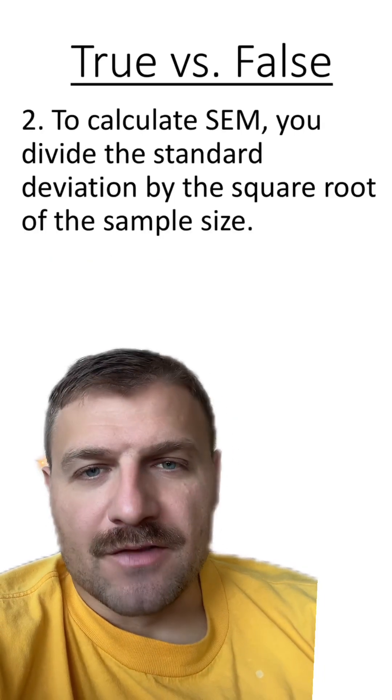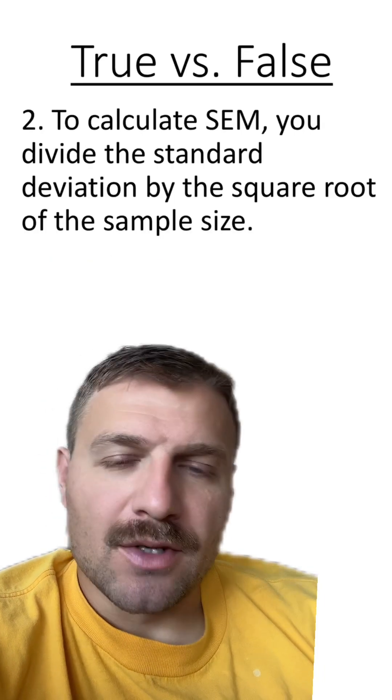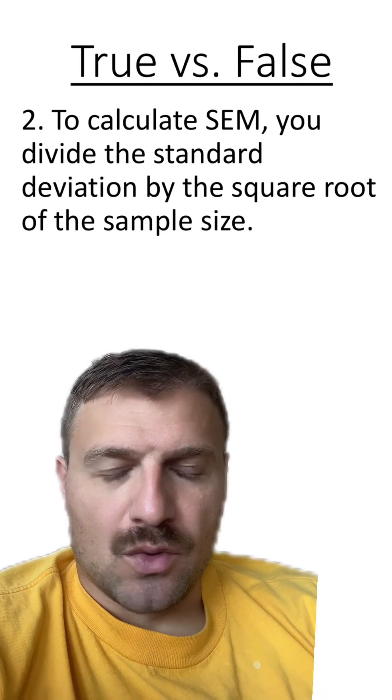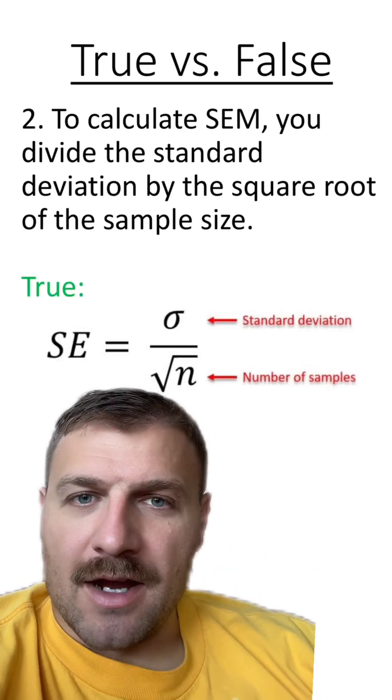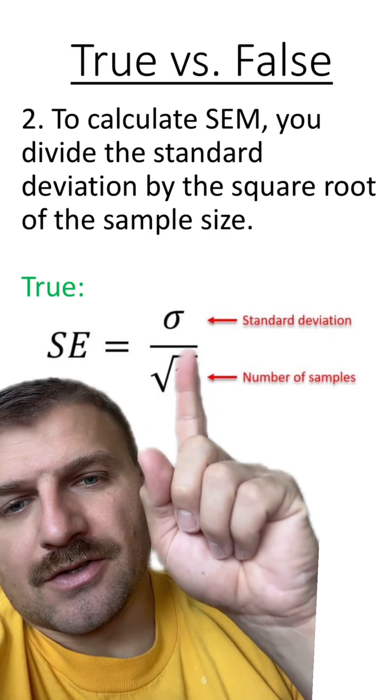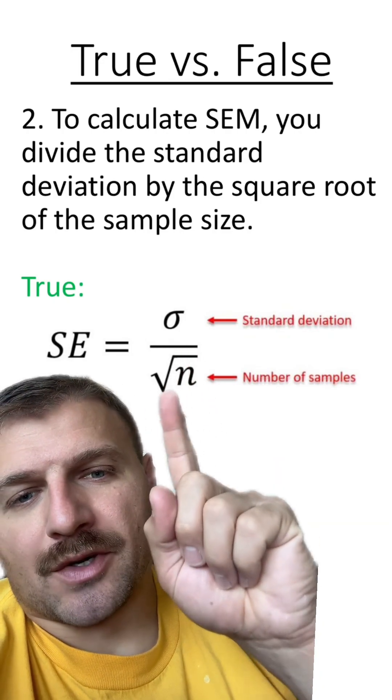Number two, to calculate SEM, you divide the standard deviation by the square root of the sample size. Is this true or false? Yeah, this is true. Standard error of the mean is pretty easy to calculate. All you do is you take the standard deviation and divide it by the square root of N.